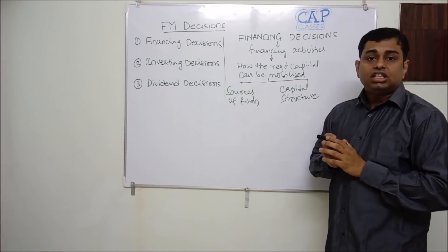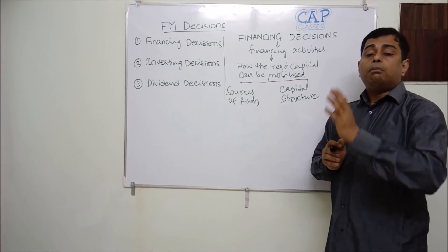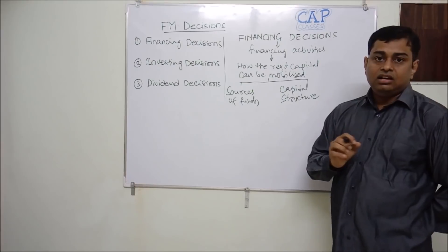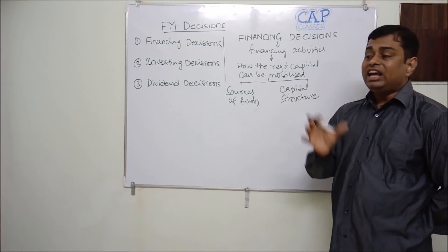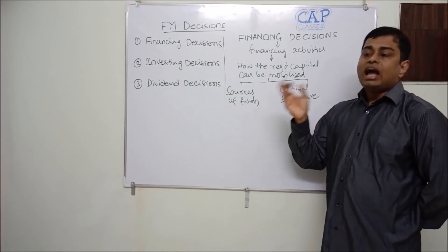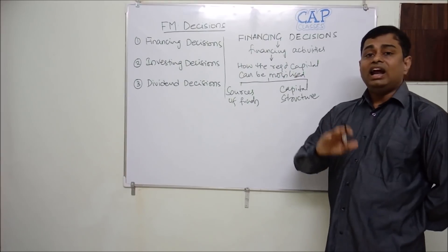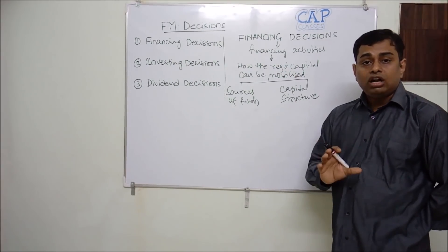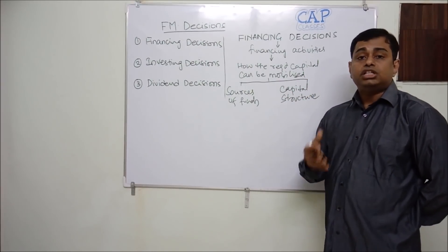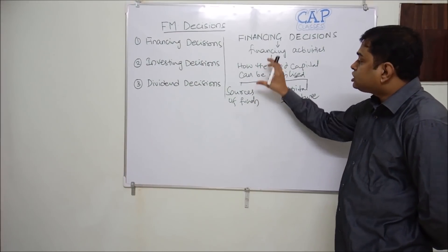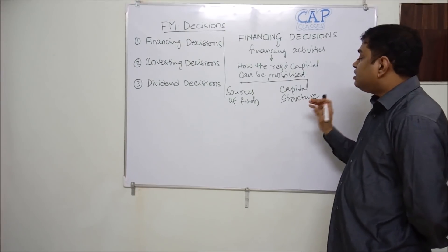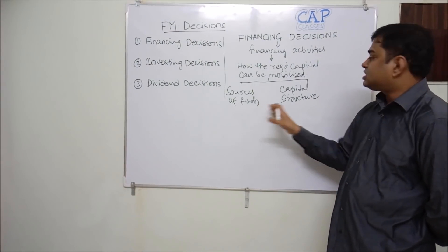In financial terminology, borrowed funds are called debt and owners' funds are called equity. So equity plus debt is the total capital of the company. From which source should I mobilize money is one question to be addressed by the finance manager, and the other one is capital structure. Let us first look at sources, then come to capital structure.